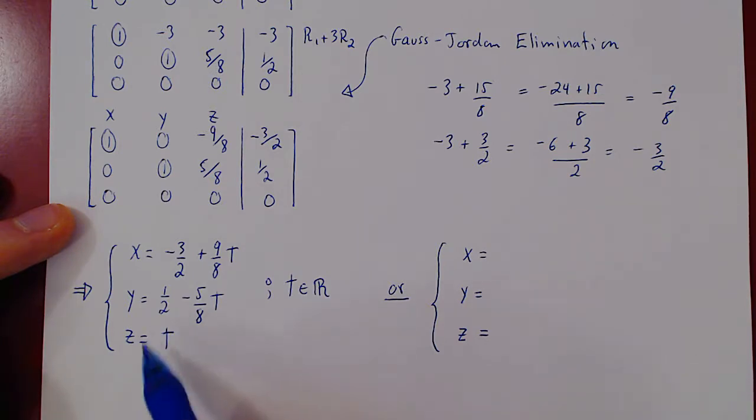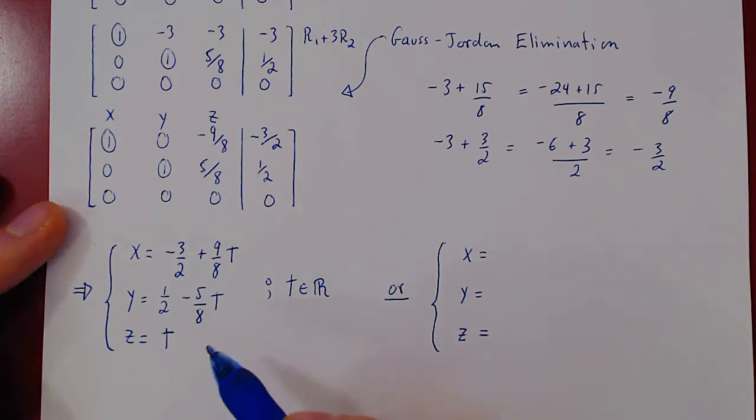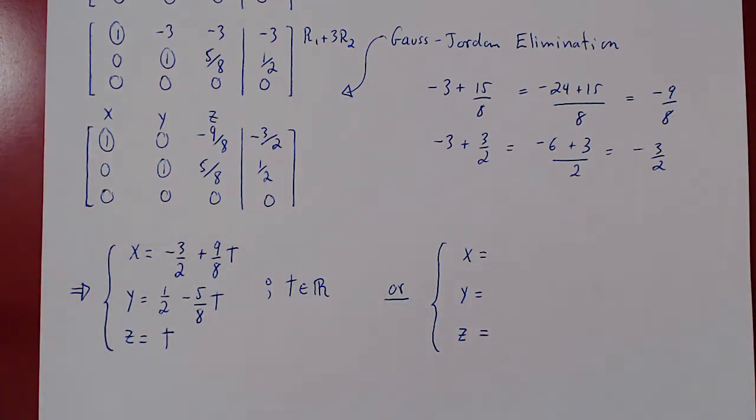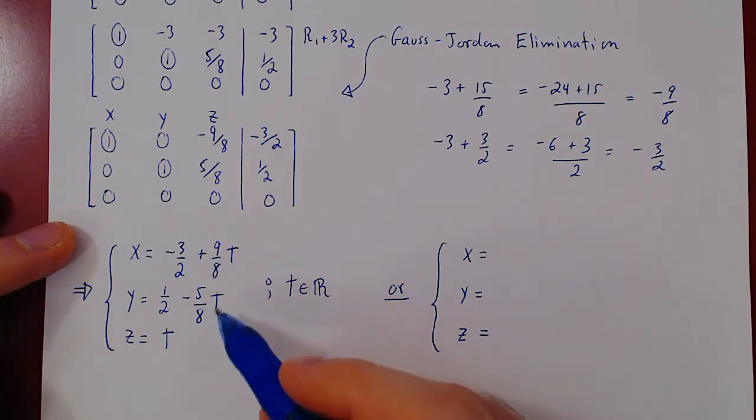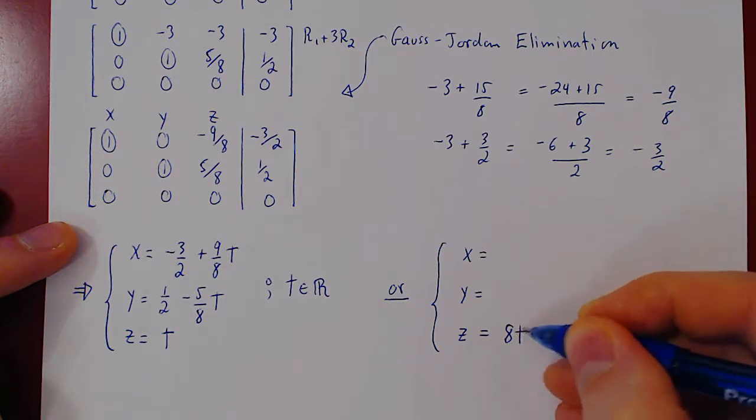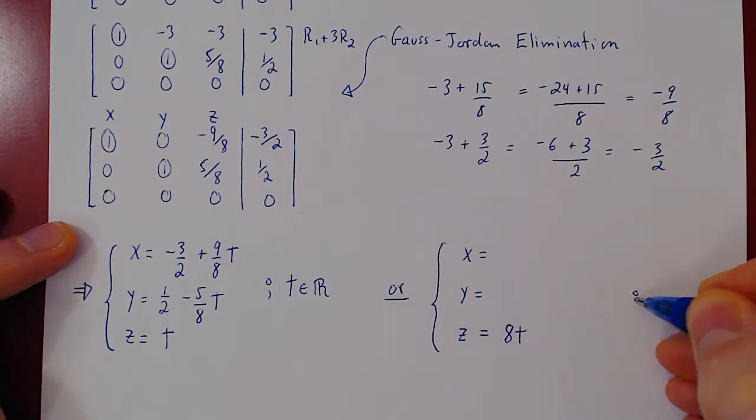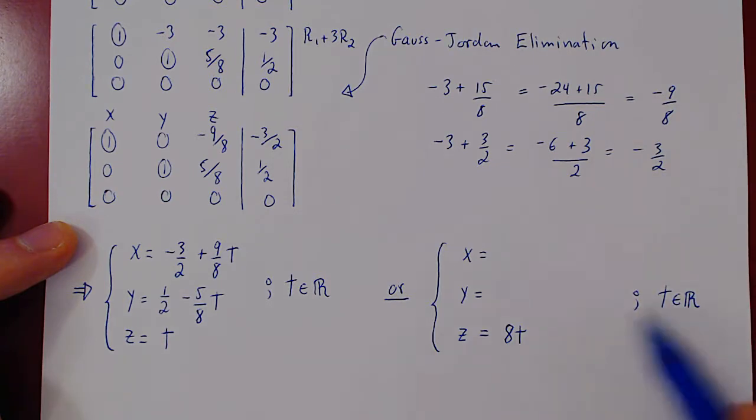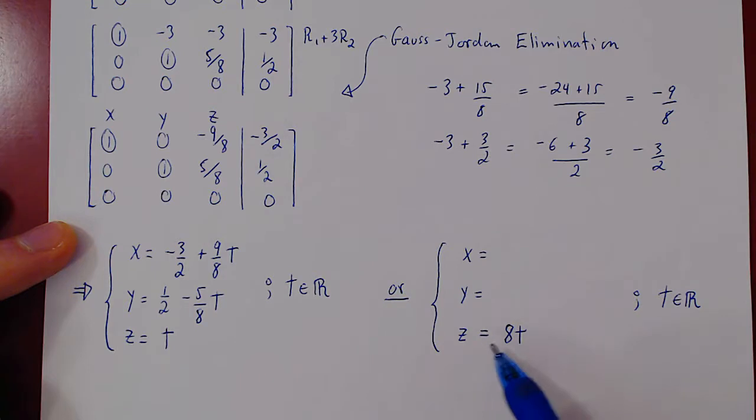z equals t, and t can range over all real values. So we can replace t by anything we want, as long as it still ranges over all real values, we still get the exact same solution set. There's a t over 8 here and a t over 8. If we want to get rid of the over 8, we can replace t simply by 8t and still allow t to range over all real numbers. If t can range over all real numbers, so can 8t, right? And now this will simplify our final answer.